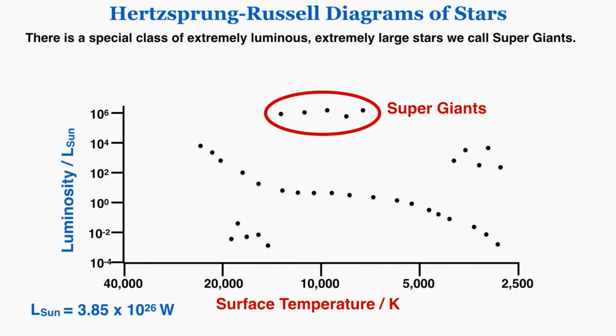There's a special class of extremely luminous and extremely large stars that we call supergiants, so this would be the area of the HR diagram where they appear.